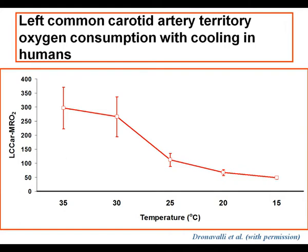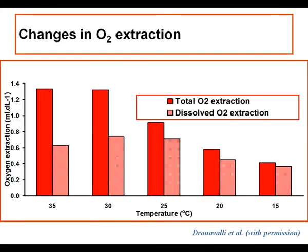The time at which autoregulation is lost, which is somewhere between 25 and 20 degrees centigrade, there is also a plateauing in this exponential curve of metabolic rate reduction. We observe changes in oxygen extraction as well. The red bars show total oxygen extraction occurring at different temperatures, all in patients having standard flow rate conditions. The component of dissolved oxygen extraction increases as temperature falls.